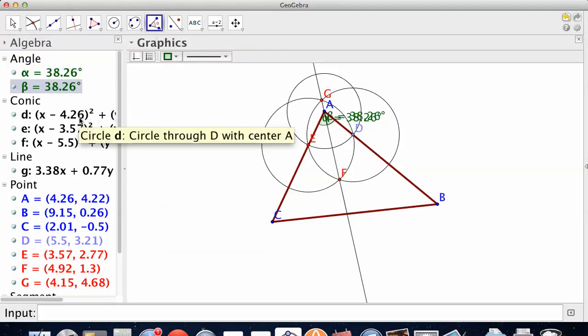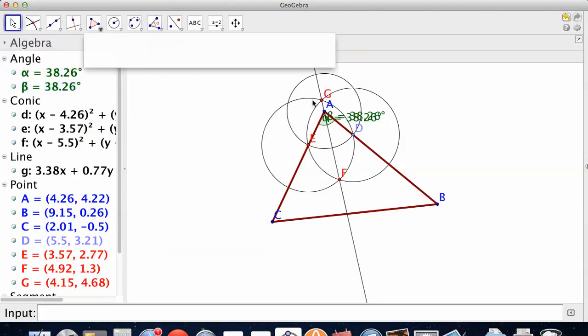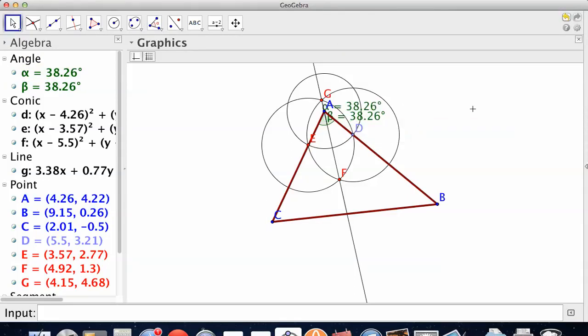Can't really read that, but look over here on the side. 38.26, 38.26. So that's your bisector.